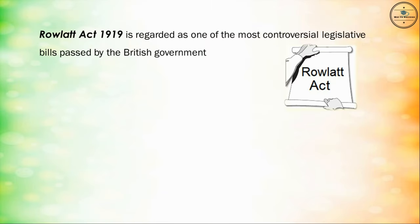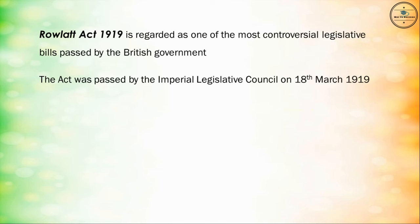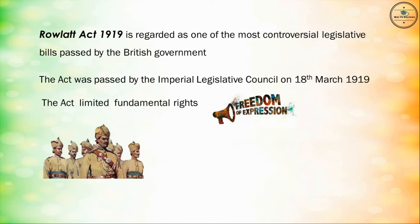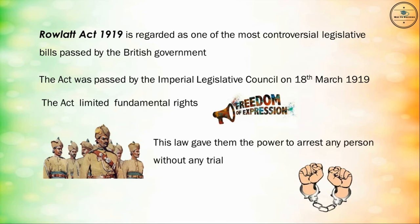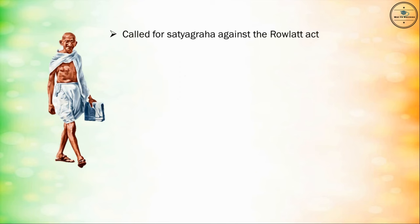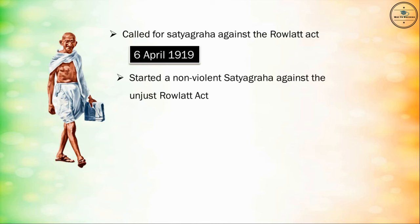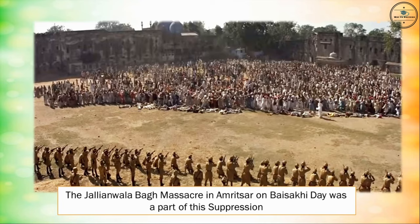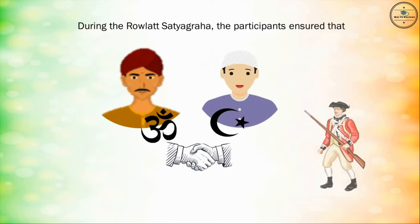The Rowlatt Act of 1919 is regarded as one of the most controversial legislative bills passed by the British government. It was passed by the Imperial Legislative Council on 18 March 1919. The Act limited fundamental rights such as freedom of expression and strengthened police powers, giving the government power to arrest any person without trial. Gandhiji called for Satyagraha against the Rowlatt Act. On 6th April 1919, Mahatma Gandhi started a non-violent Satyagraha against the unjust Rowlatt Act. There were demonstrations and hartals across the country, and the government used brutal measures to suppress them. The Jallianwala Bagh Massacre in Amritsar on Baisakhi Day was a part of this suppression. During the Rowlatt Satyagraha, the participants ensured that Hindus and Muslims were united against British rule.